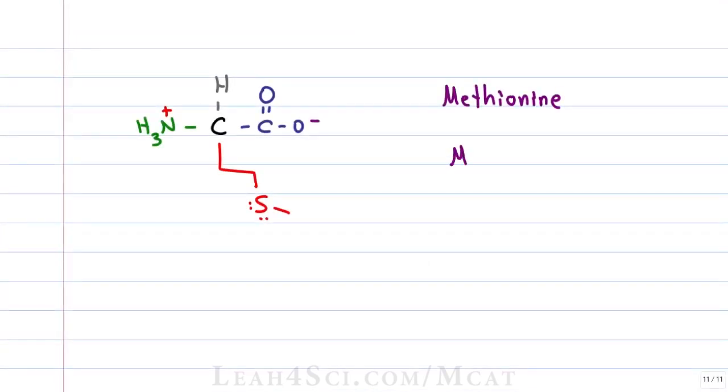Methionine which is MET or M is a very important amino acid. It's considered an aliphatic non-polar hydrophobic side chain even though it has that sulfur atom. This sulfur group makes it a thioether because think about it, an ether is ROR and thio tells us sulfur. But with sulfur bound to carbon, the difference in polarity is not significant enough to make it reactive with other groups and that keeps it non-polar.